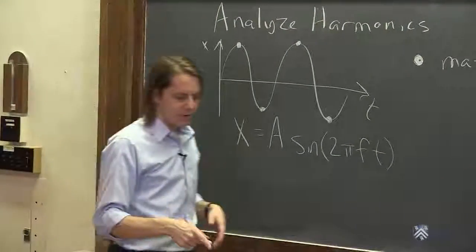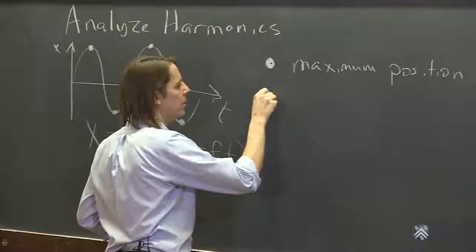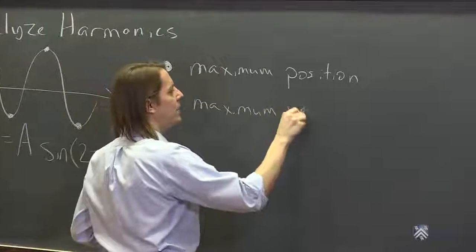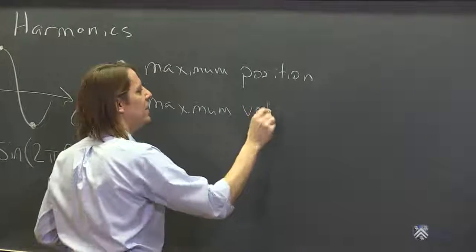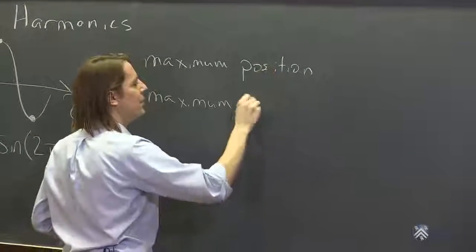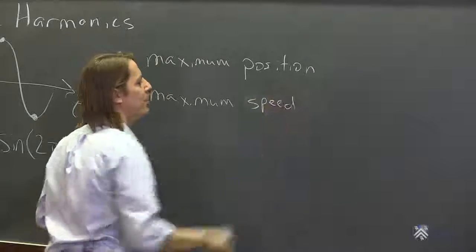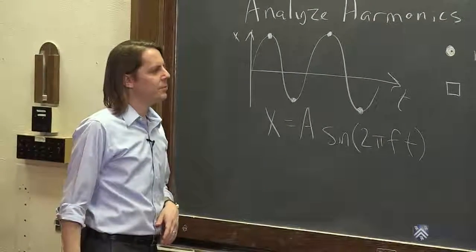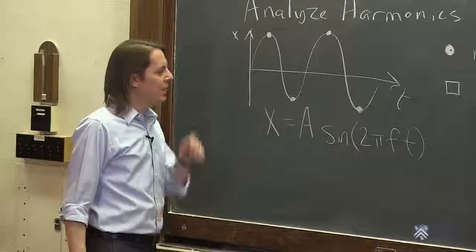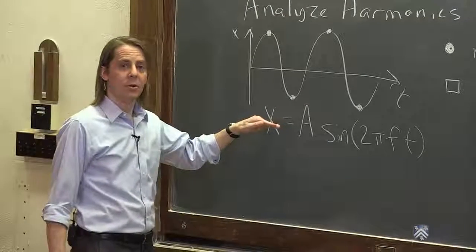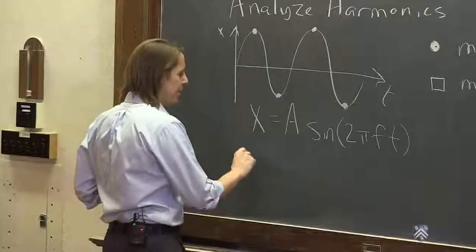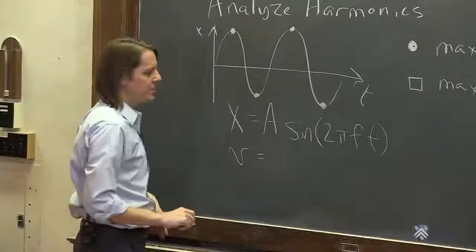We could also say let's put an open square on the maximum speed. So we don't have to worry about up or down, let's just say the magnitude, the speed. One way to get it is to know the formula for speed. So here we have a description of the position versus time. You can actually write the speed versus time.